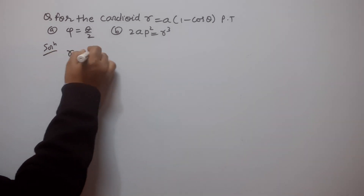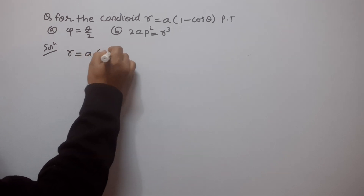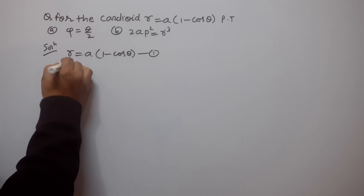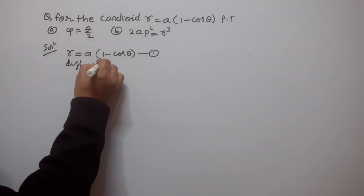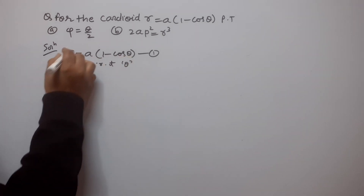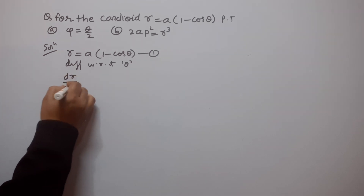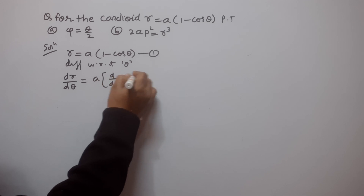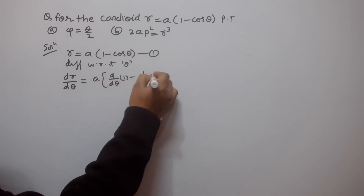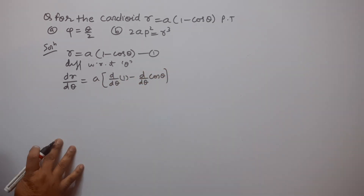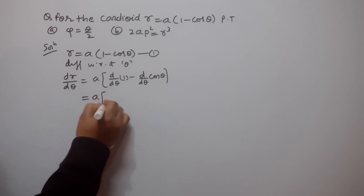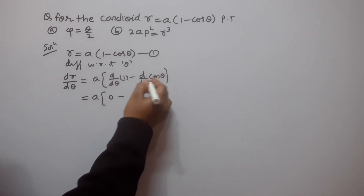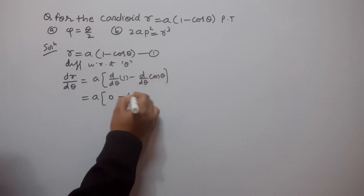The given equation of the curve is r equal to a(1 minus cos θ). Now we differentiate this with respect to θ. So dr/dθ is equal to — here, A is constant — differentiation of 1 with respect to θ minus differentiation of cos θ with respect to θ.